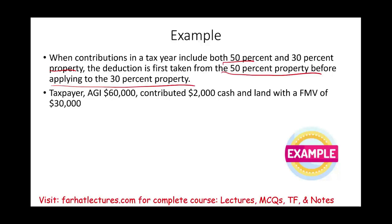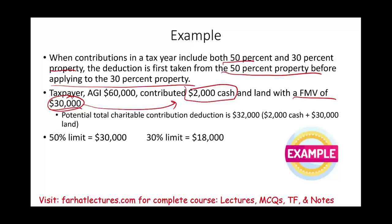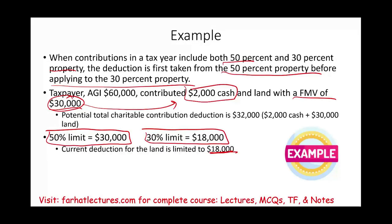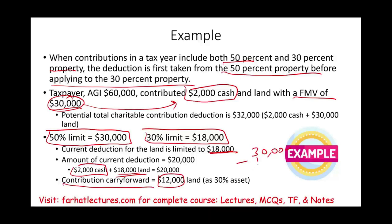Example: Taxpayer's AGI is $60,000. This individual contributed $2,000 in cash and land with a fair market value of $30,000, assuming the land is long-term capital gain property. The potential total charitable contribution is $32,000. The limit on cash is 50% of AGI = $30,000. The limit on long-term capital gain property is 30% of AGI = $18,000. Therefore, the current deduction for the land is limited to $18,000, not $30,000. The $2,000 cash deduction is fine as it is well under the limit. Total deduction this year: $2,000 + $18,000 = $20,000. The remaining $12,000 for the land carries forward as a 30% asset carryover.